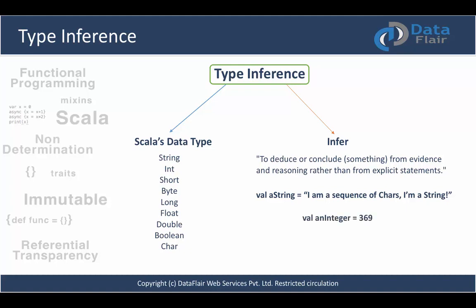For example, when we define an integer using val and give it a numeric literal, the Scala compiler understands that this is an integer, so you don't have to explicitly declare the type. The same applies to boolean values.